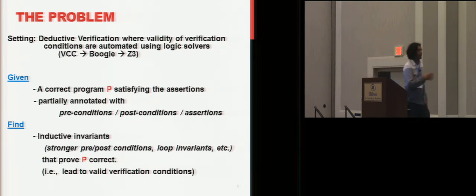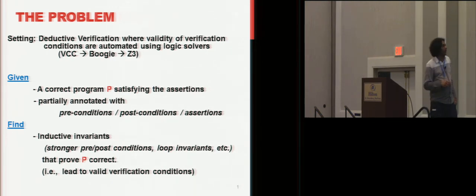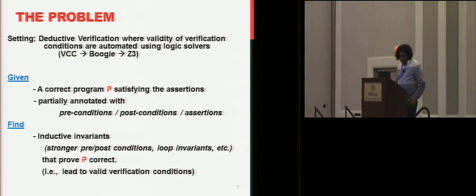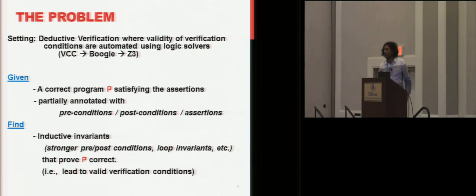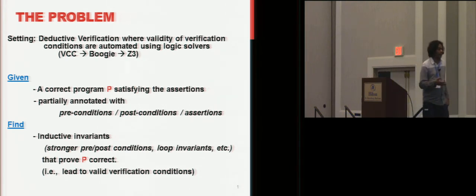So what are we given? We're given a correct program — let's assume it's correct for now — and it satisfies the assertions written in the program, and it's partially annotated with preconditions, postconditions, assertions. And what we want to do is find inductive invariants that will prove this program correct using Floyd-Hoare-style deductive verification. So you want to strengthen the pre- and post-conditions.